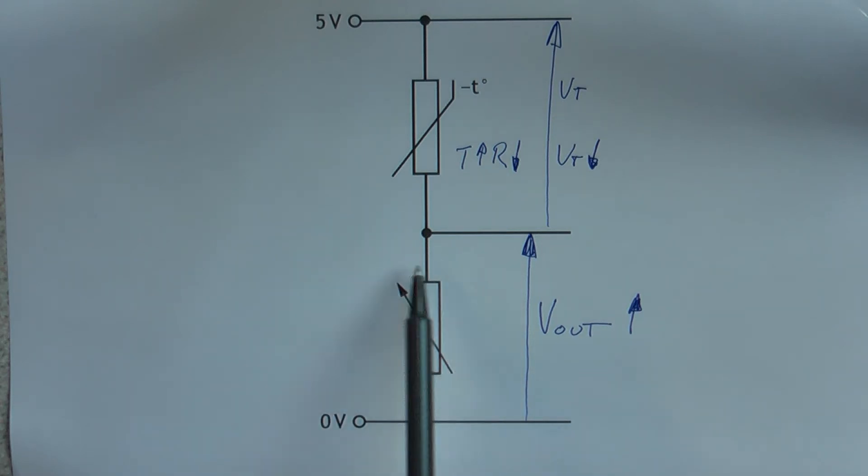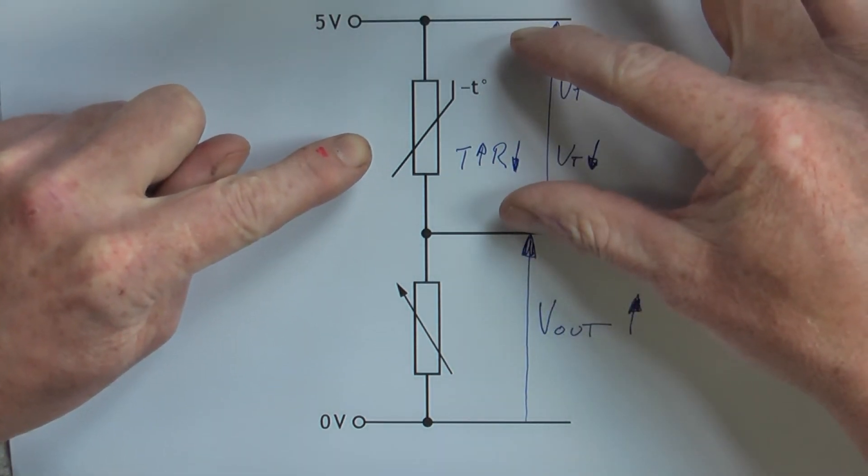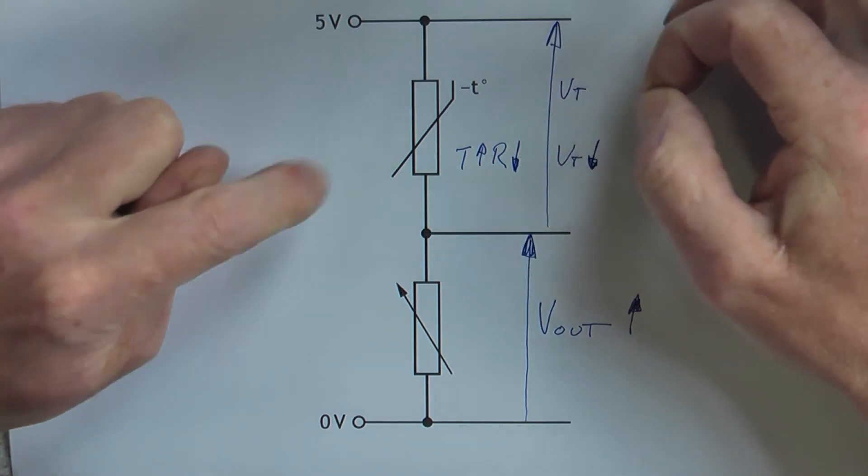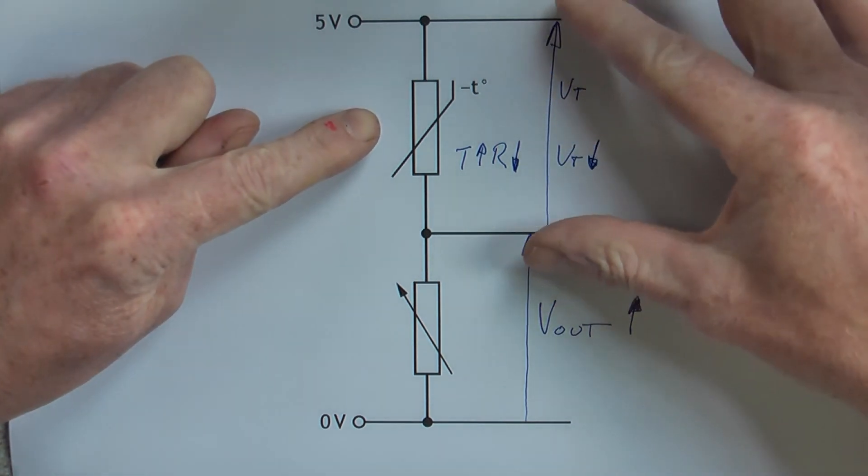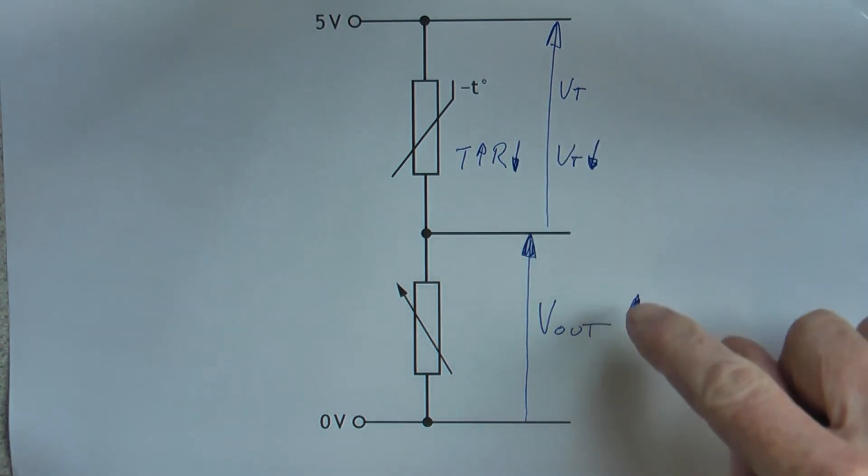This part here, the variable resistor, it will adjust the sensitivity of the circuit. If that resistance gets bigger, the voltage across it will get bigger. If that resistance gets smaller, the voltage across it will get smaller. And as that voltage gets bigger, this one gets smaller. As this one gets smaller, that one gets bigger.